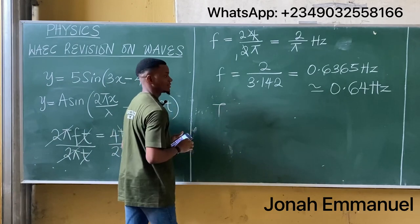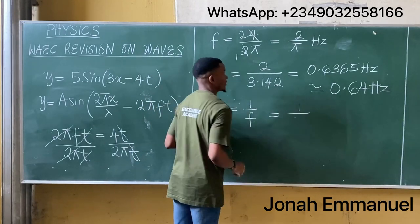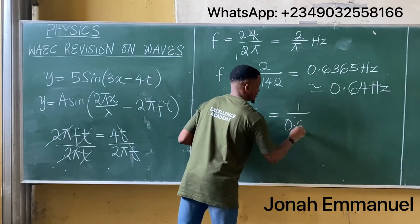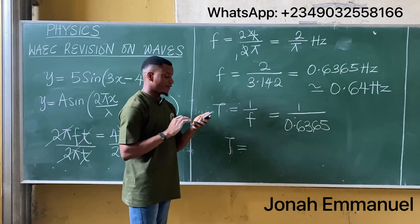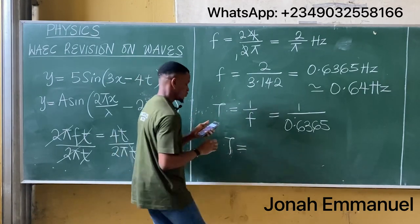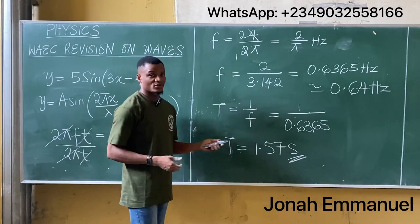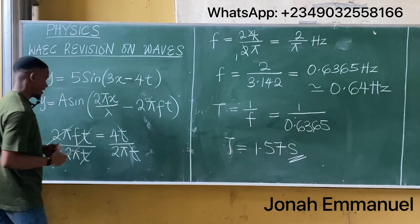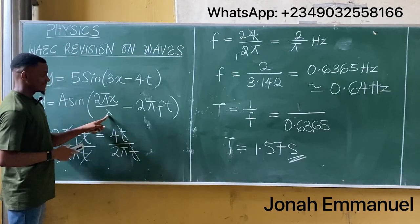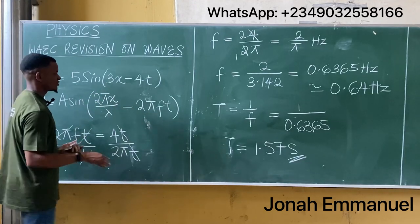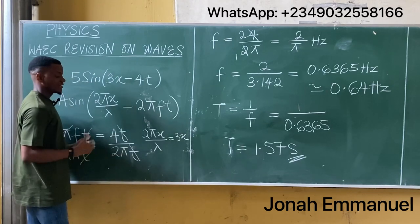We also have to find the period. Period T = 1/f = 1/0.6365 ≈ 1.57 seconds. So the period is approximately 1.57 seconds.